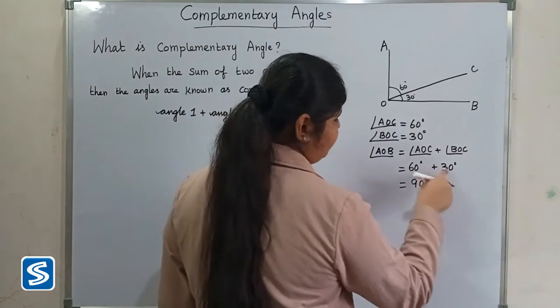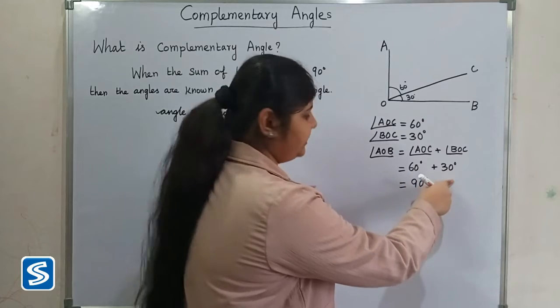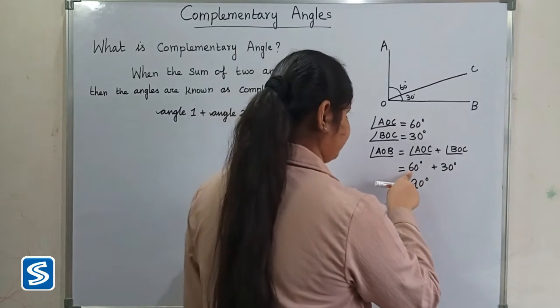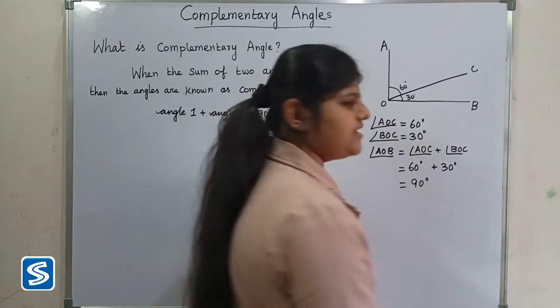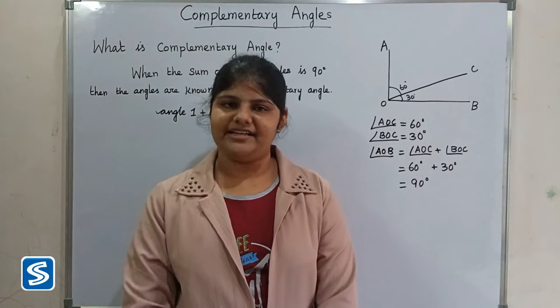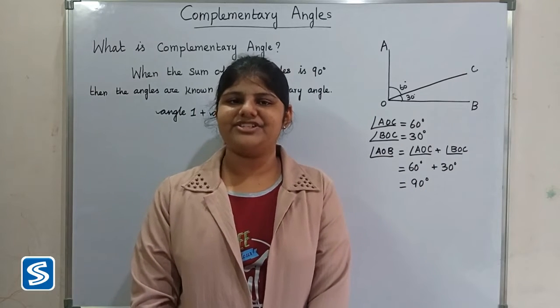60 degrees is the complementary angle of 30 degrees, and 30 degrees is the complementary angle of 60 degrees. So the sum of complementary angles always forms a right angle.